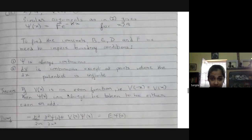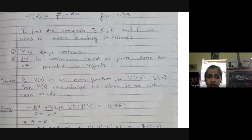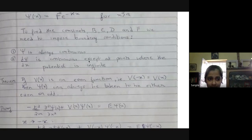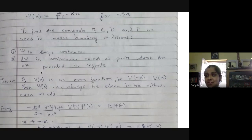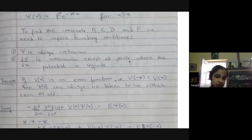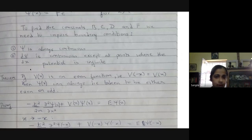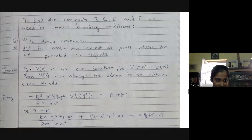The general boundary conditions for any wave function are: first, ψ is always continuous; and second, dψ/dx is continuous except at points where the potential is infinite. Since we have no infinite potentials in our finite square well problem, we have two boundary conditions: ψ continuous and dψ/dx continuous.